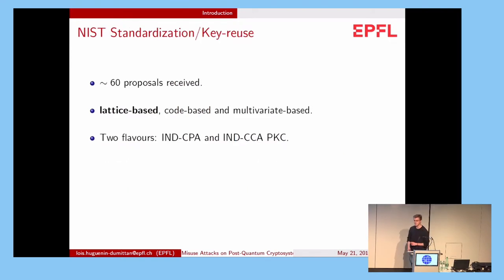Roughly 60 proposals were received at the first deadline in winter 2017, and most of them we can sort into three categories: lattice-based, code-based, and multivariate-based. Today we will focus mainly on the lattice-based.